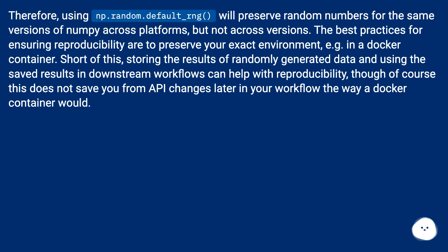The best practices for ensuring reproducibility are to preserve your exact environment, e.g. in a Docker container. Short of this, storing the results of randomly generated data and using the saved results in downstream workflows can help with reproducibility, though of course this does not save you from API changes later in your workflow the way a Docker container would.